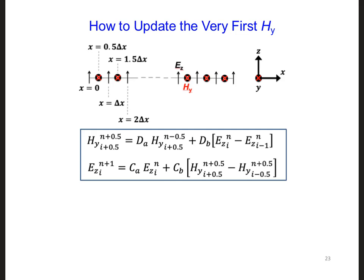Considering the update equation for HY, when we update the HYs, we only need one previous value of HY at the same location in space, i plus 1 half, i plus 1 half. That is, we don't need any older values of HY or any neighboring values of HYs.